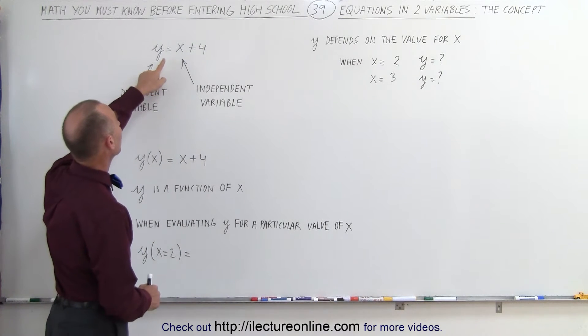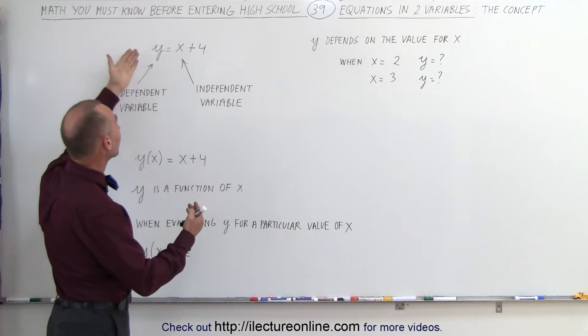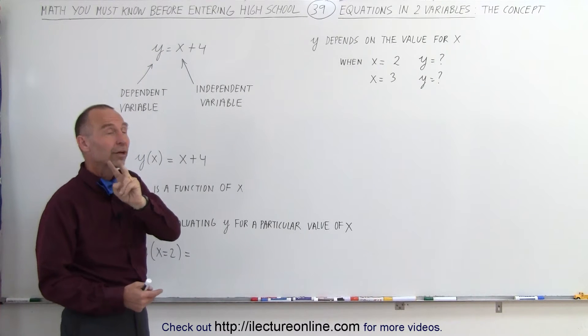When you see an equation like this, y equals x plus 4, this is an equation because it has a left side, a right side, an equal sign, and it has two variables.